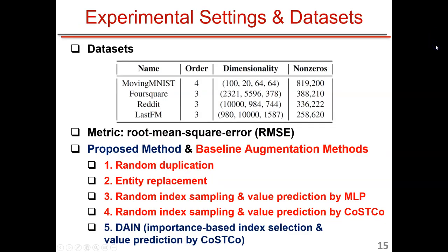For experimental settings, we used four real tensors: Moving MNIST (a video dataset), Foursquare (a POI dataset), Reddit, and Last.FM (a music dataset). Our primary evaluation metric is test RMSE, where lower is better. Our proposed method is DANE. Baseline augmentation methods include random duplication, slightly perturbed indices, randomly sampled indices with MLP-predicted values, and a variant using a different value predictor.